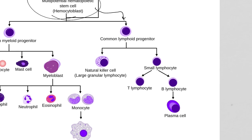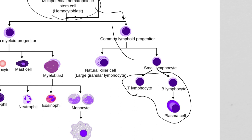From that lymphoid progenitor cell, you can make natural killer cells, T and B lymphocytes, and those B lymphocytes can then develop into plasma cells that secrete antibodies. These stem cells — particularly the lymphoid progenitor and these small lymphocyte precursors — are where we're focusing. They have the ability to divide repeatedly for as long as they want to, which is what they need in order to keep making more B cells and T cells throughout a person's life.